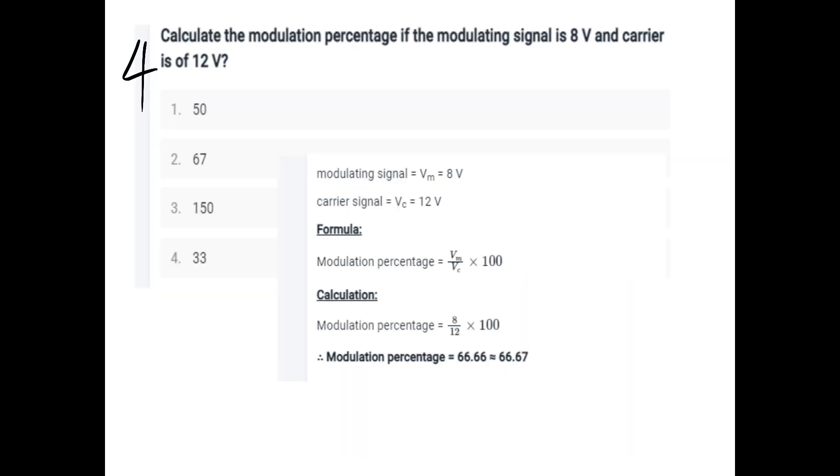Question four: Calculate the modulation percentage if the modulating signal is 8 volts and carrier signal is 12 volts. The formula we have is Vm by Vc into 100. Vm is 8 volt, carrier signal is 12 volt. The answer is 66.67.